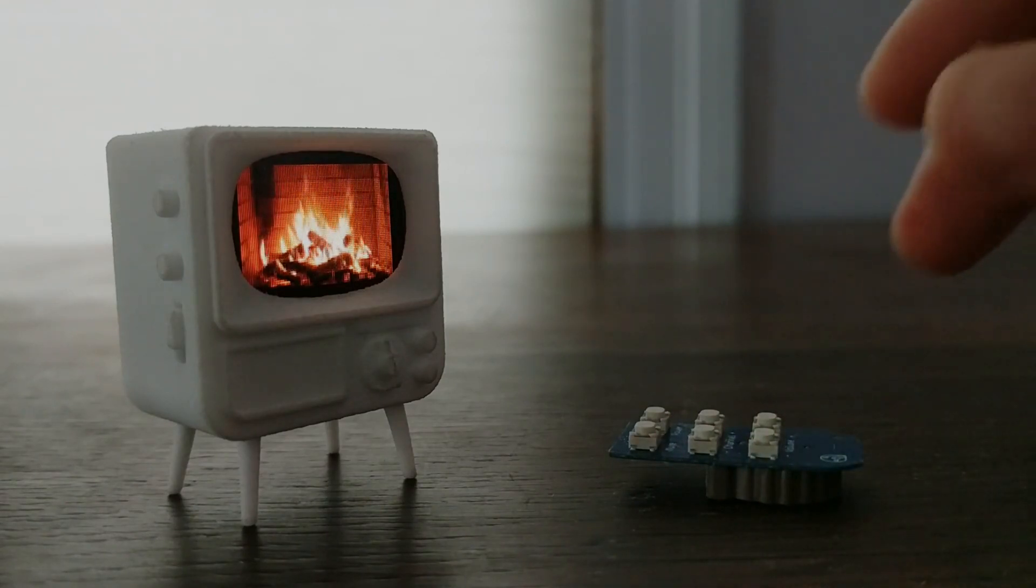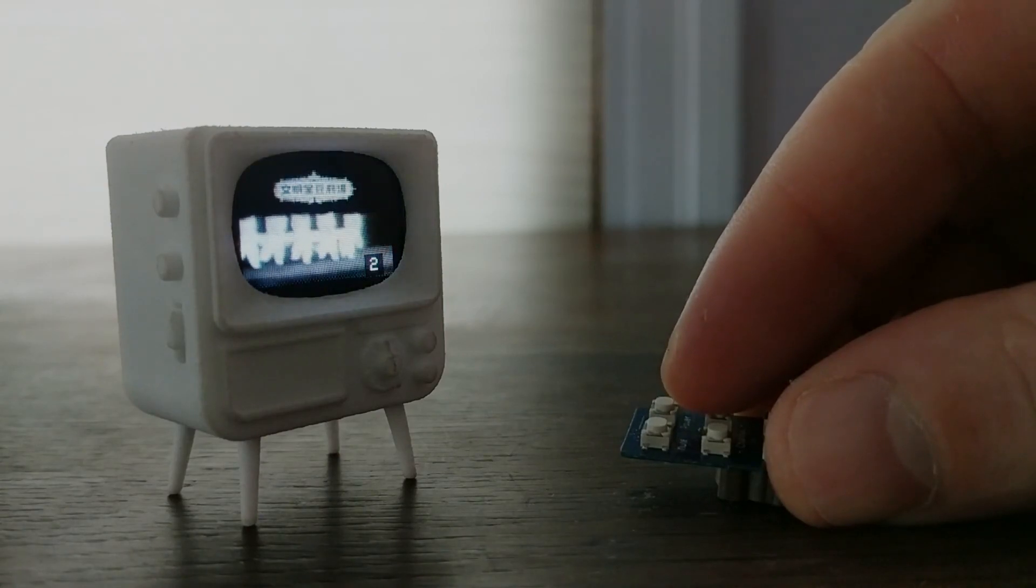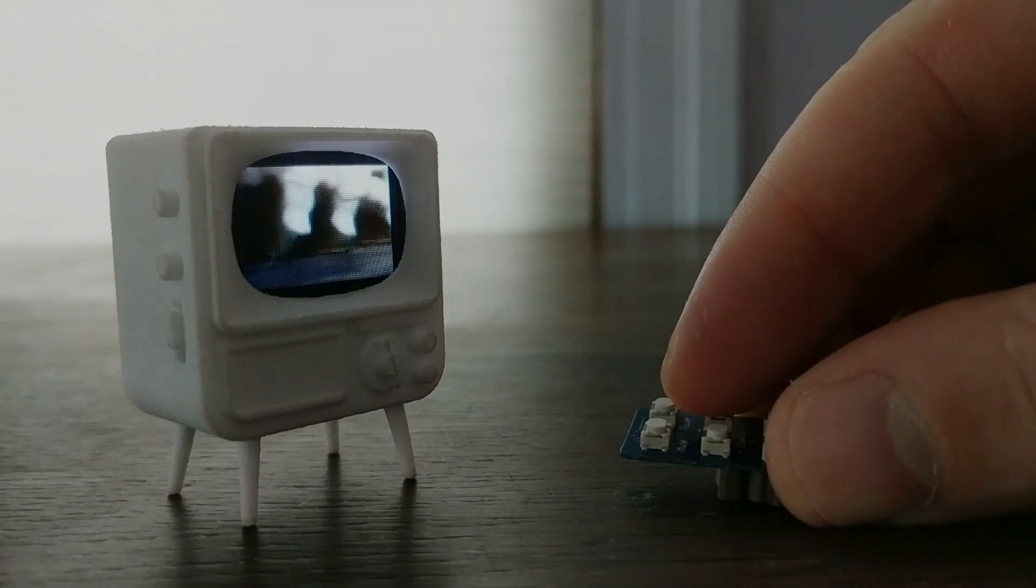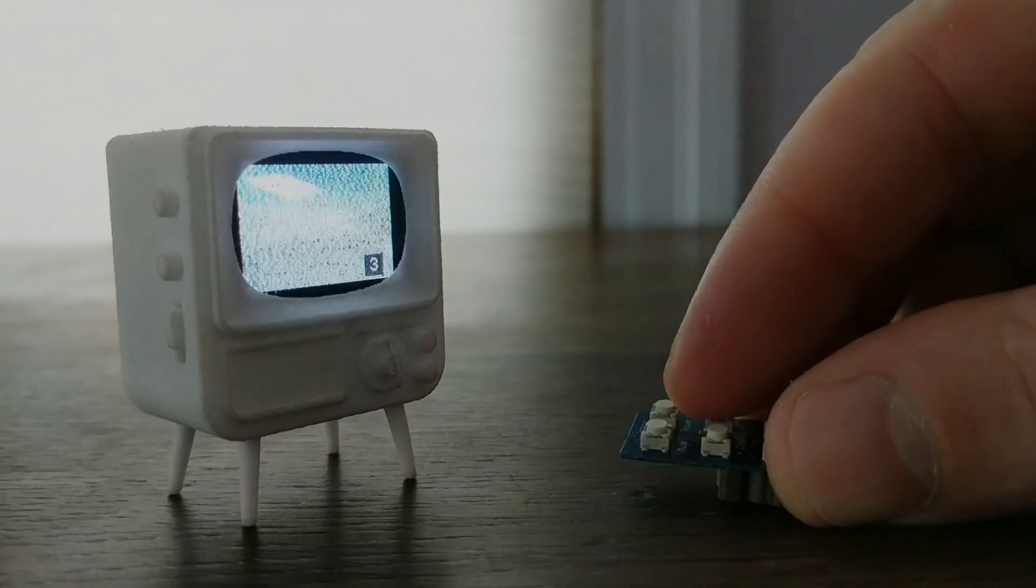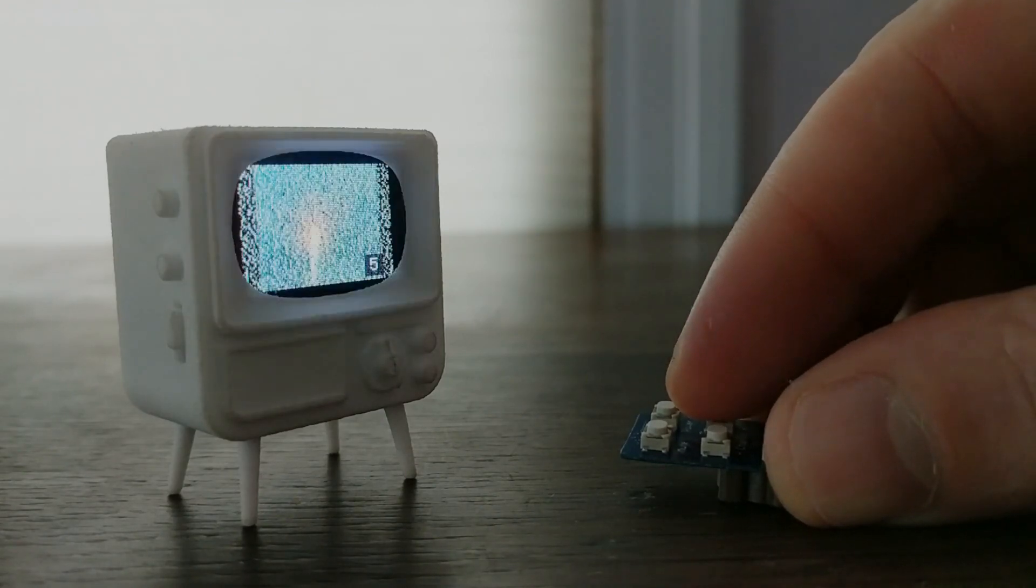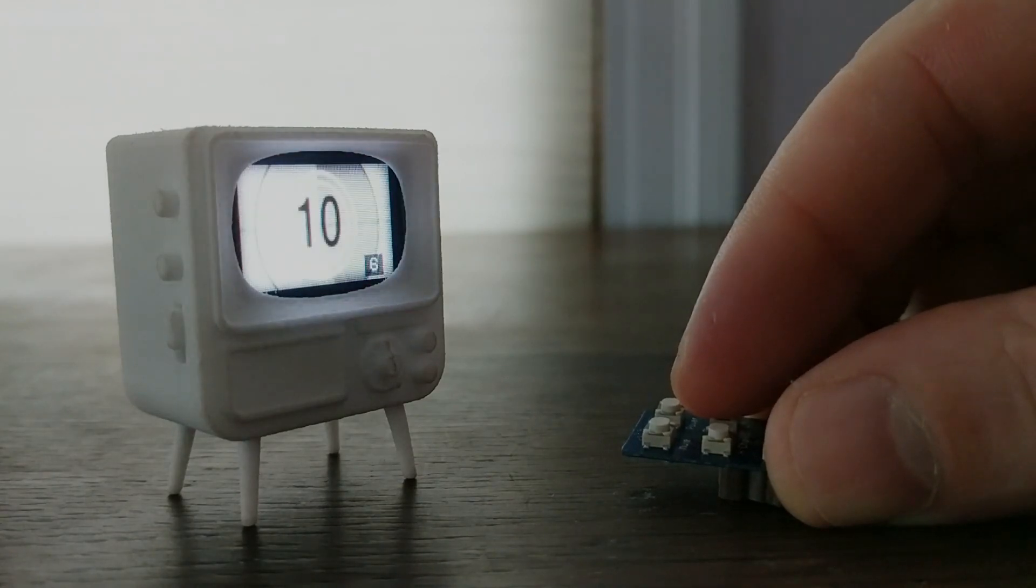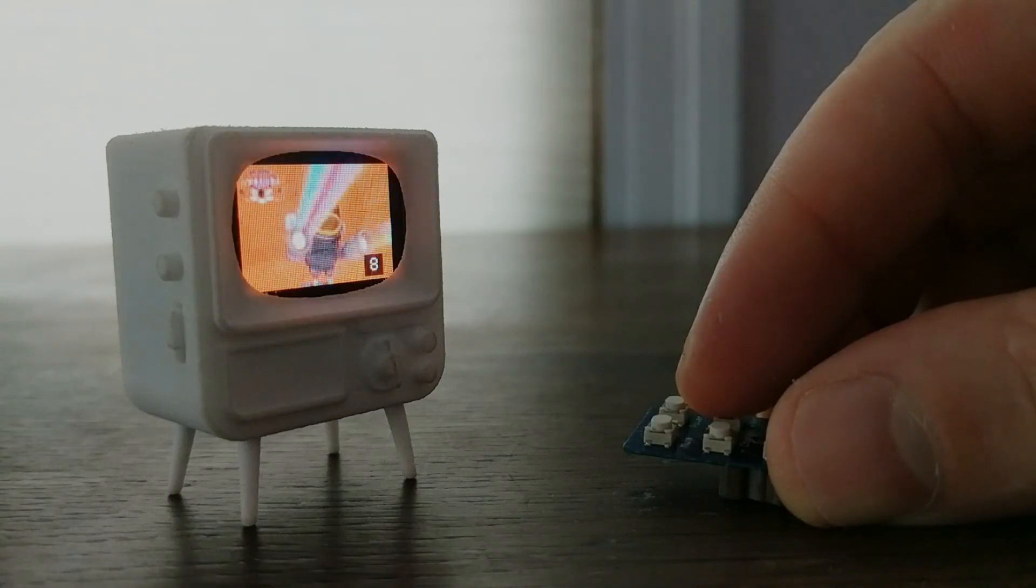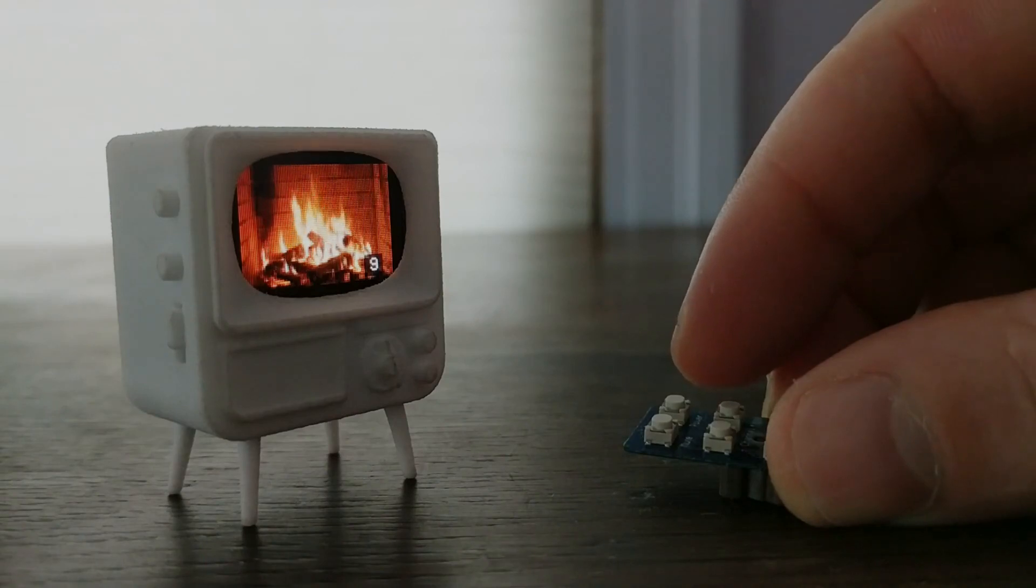You can change the channel and control the volume using the remote. These are just the demo videos that came on the card. To load your own videos, you'll need to convert them to the right format using a little conversion program provided by TinyCircuits. And yes, it's possible to convert entire movies to play on this thing. Their website says you should be able to put about 5 hours worth of movies on one SD card.